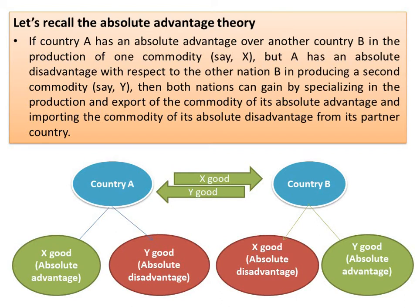Before going to the theory of comparative advantage, let us recall the theory of absolute advantage given by Adam Smith. According to the law of absolute advantage, if country A has an absolute advantage over another country B in the production of one commodity x, but A has an absolute disadvantage with respect to country B in producing a second commodity y, while country B has absolute advantage over A in producing y and absolute disadvantage in producing x, then there exists a possibility of gainful trade.